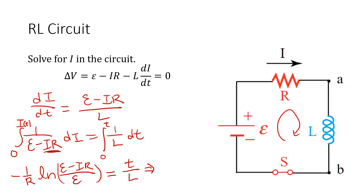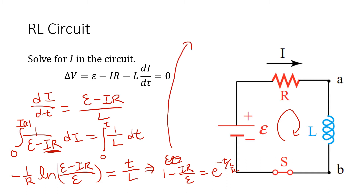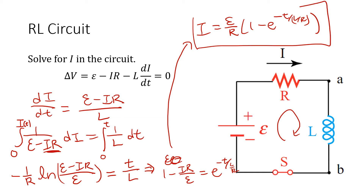Working through the algebra — we get (1 minus iR/ε) = e^(−tR/L). Solving for i: i(t) = (ε/R) · (1 minus e^(−tR/L)). The units work out: voltage over voltage is unitless, and e is unitless. And that's how you solve an RL circuit. If you notice, everything is very similar to the RC circuit.